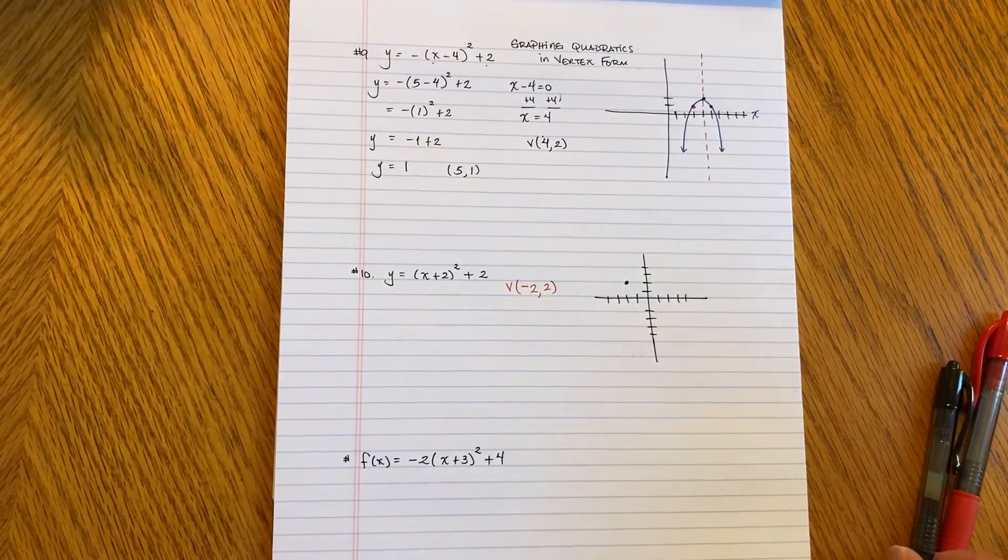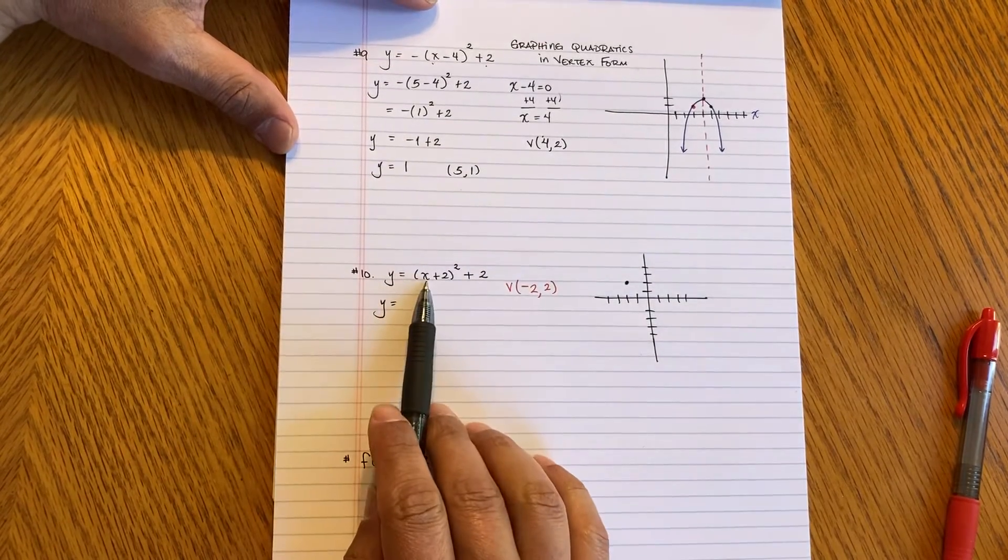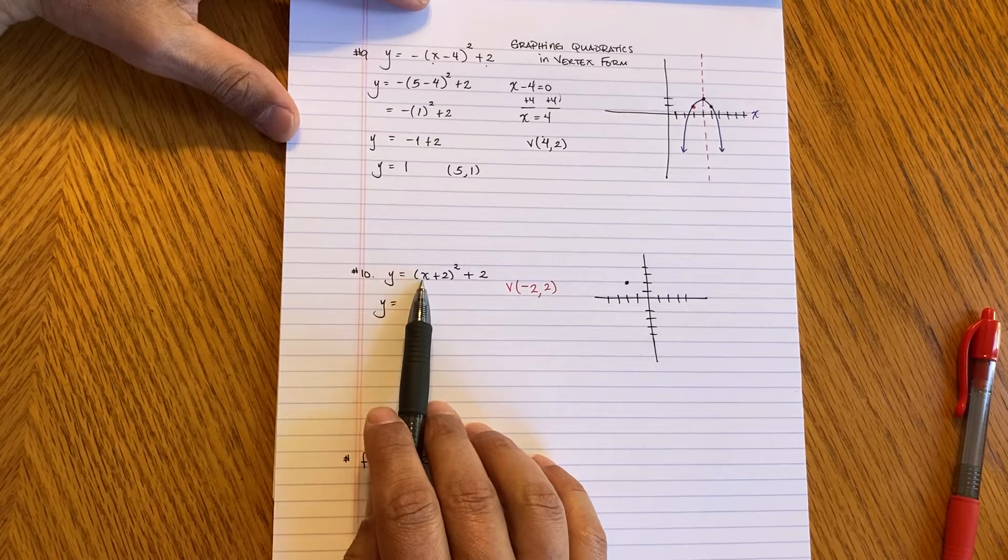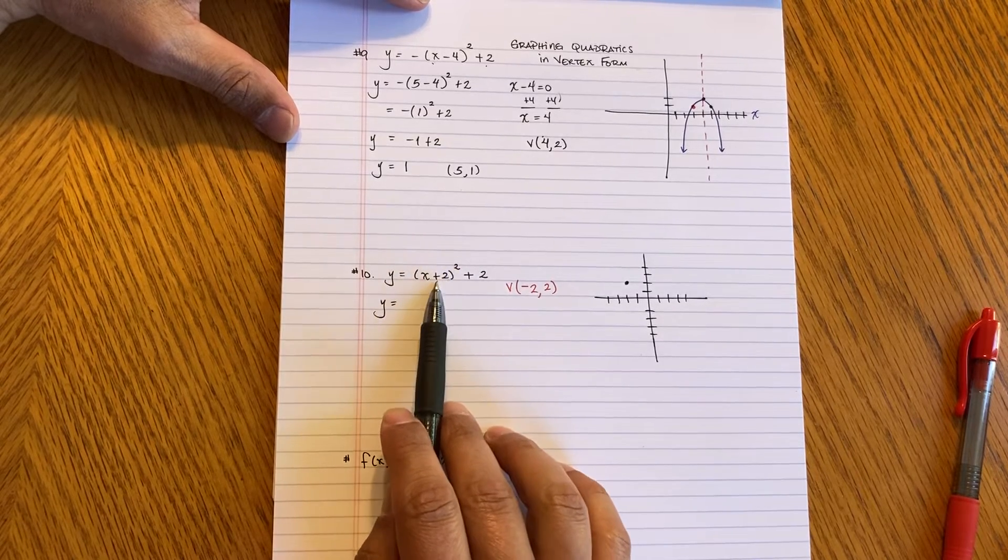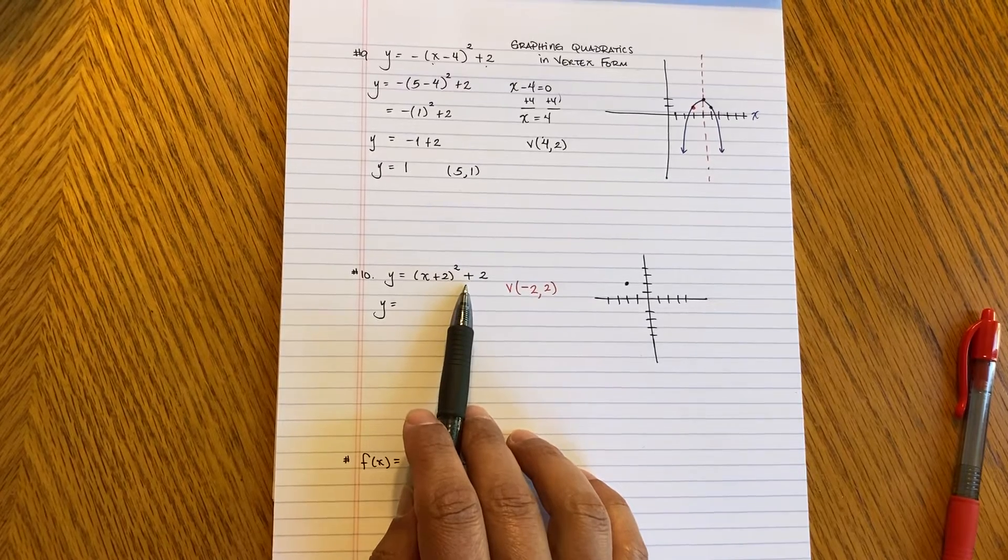Now I need to pick a point. What Y value should I pick? You don't want to pick something too big. Let's say I pick 3. Well, 3 plus 2 is 5. 5 squared, that's 25. Plus 2 is 27. That's too big. I don't want to be dealing with very big numbers.